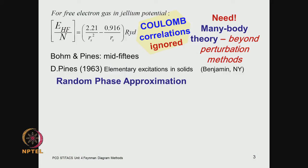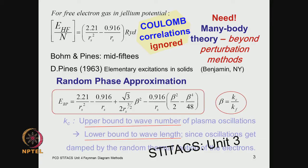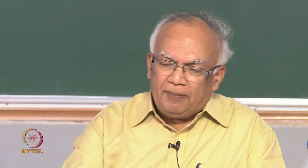The technique we discussed in the previous unit is the random phase approximation (RPA), due to Bohm and Pines, developed in the mid-1950s and described in David Pines' book 'Elementary Excitations in Solids.' It gives a result beyond first-order perturbation theory, providing a correction. We discussed some of these results in Unit 3 — this is just a quick recapitulation.